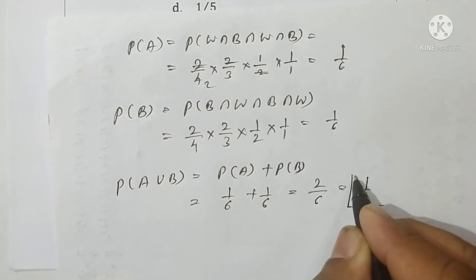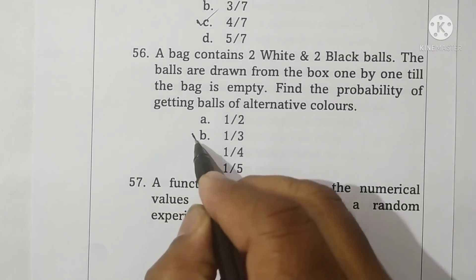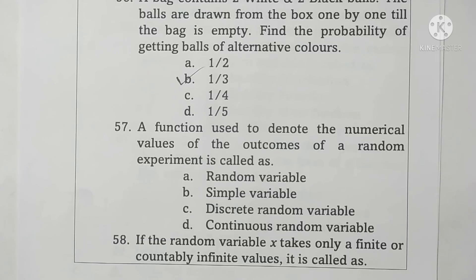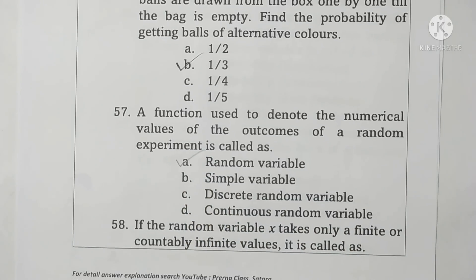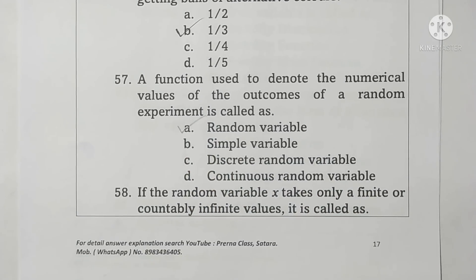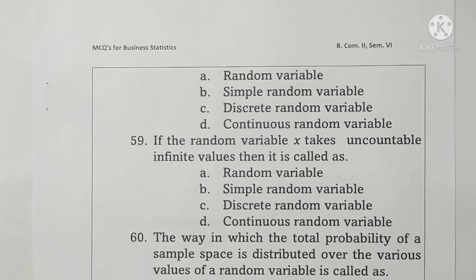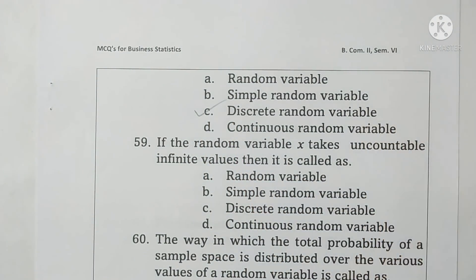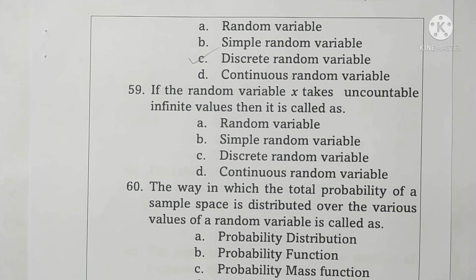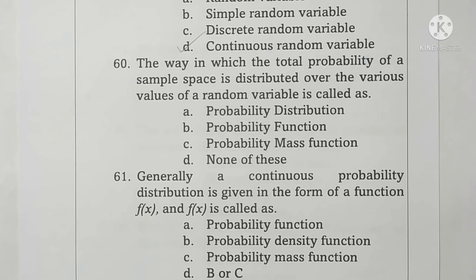Question 57: A function used to denote the numerical values of outcomes of a random experiment is called a random variable. Option A is correct. Question 58: If a random variable X takes only a finite or countably infinite number of values, it is called a discrete random variable. Option C is correct. Question 59: If the random variable X takes uncountably infinite values, it is called a continuous random variable. Option D is correct.